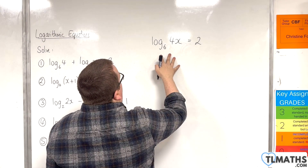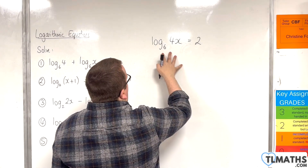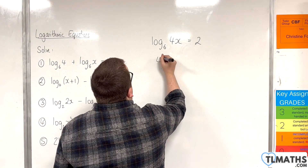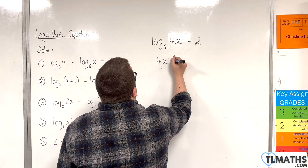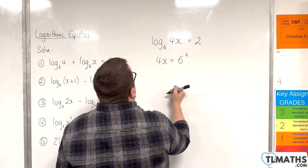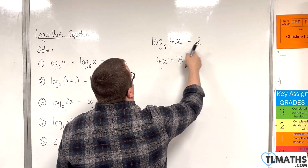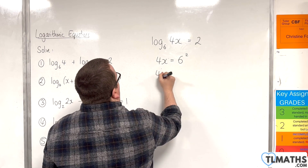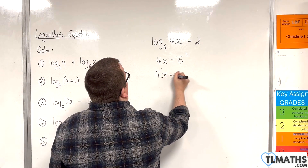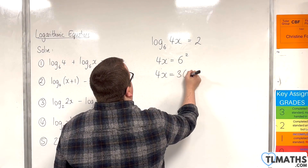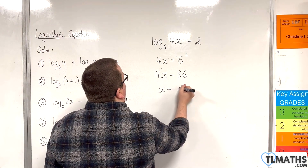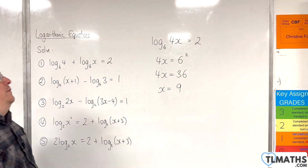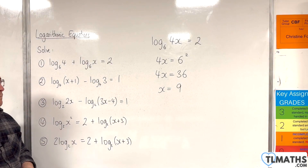Now convert from logarithmic form to exponential form. 4x will be 6 squared, so 6 to the power of 2 gives us 4x equals 36. So x is equal to 9, and that is the solution to question number 1.